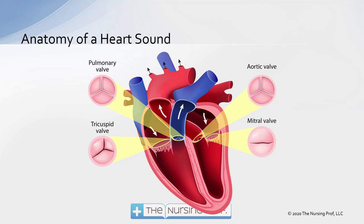The right ventricle then collects the blood, contracts, and pushes the blood up through the pulmonary artery to the lungs. Notice that before it gets to the pulmonary artery, it has to go through the pulmonary valve. So we have two valves on the right side of the heart.